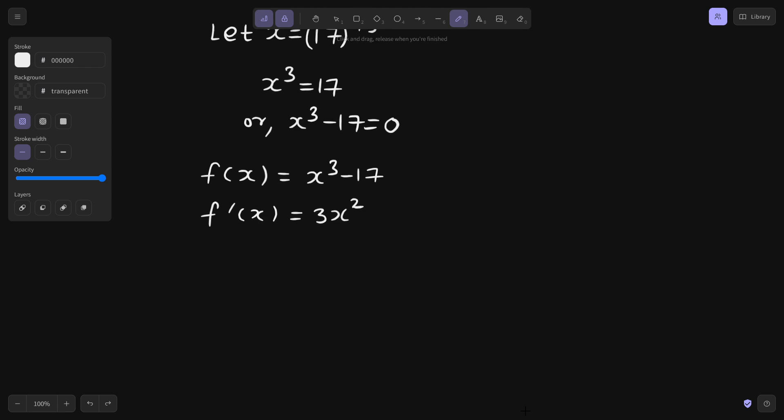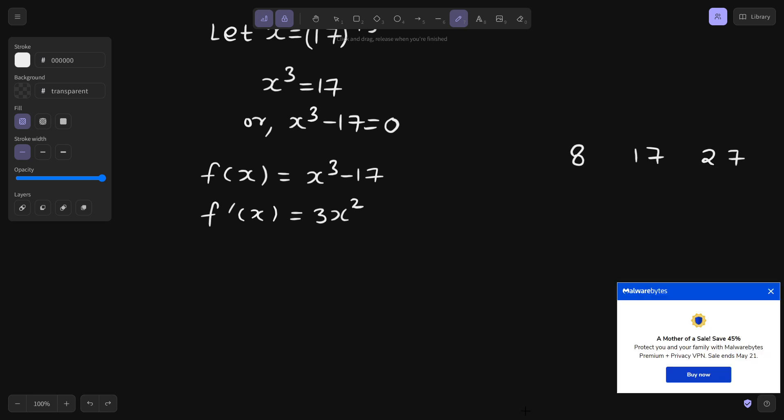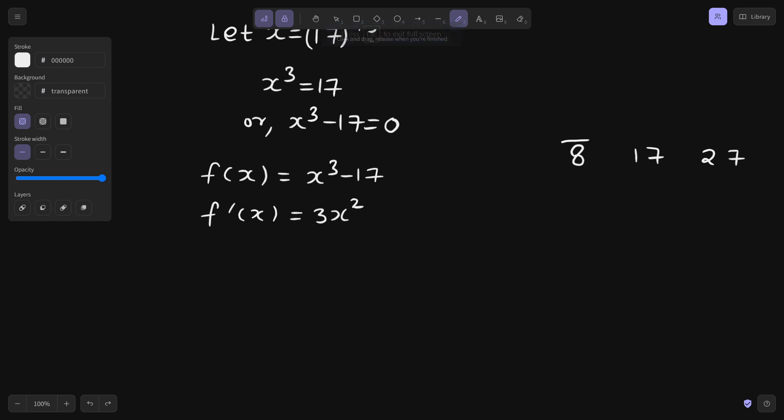You can roughly think that your number which is 17 lies between 8 and 27 and if you take cube root on both sides then also it lies in between. This is 2, this is cube root of 17 and this is 3. So this will lie between 2 and 3.